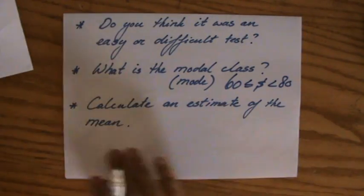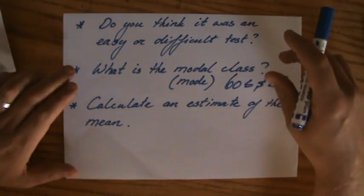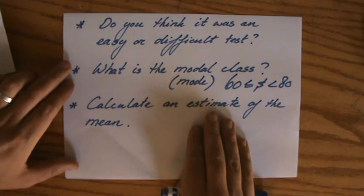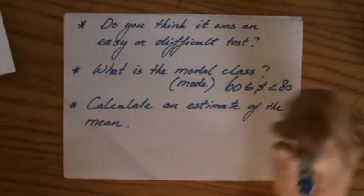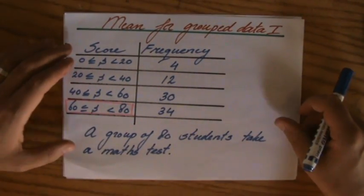But now, that last question. Calculate an estimate of the mean. And that is a little bit of a paradox, isn't it? To calculate an estimate. Because usually you either estimate or you calculate. But now we have to calculate an estimate. Now, why is that? Why do we calculate an estimate of the mean?